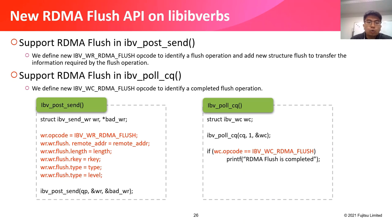How to implement the new RDMA flush API on libibverbs. To support RDMA flush in ibv_post_send, we defined the new IBV_WR_RDMA_FLUSH opcode to identify a flush operation, and a new struct flush to transfer the information required by the flush operation. To support RDMA flush in ibv_poll_cq, we defined the new IBV_WC_RDMA_FLUSH opcode to identify a completed flush operation. Applications post an RDMA flush request by ibv_post_send and get the completion of RDMA flush by ibv_poll_cq.